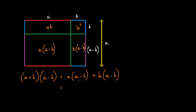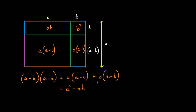Now let's find out what b multiplied by a minus b is, and let's put this value in brackets. If we look at the rectangle ab and minus b squared from it, we're left with b multiplied by a minus b. Therefore, b multiplied by a minus b is ab minus b squared. So once again, look at the rectangle ab and then subtract b squared from it. If you do that, you're going to be left with b multiplied by a minus b.